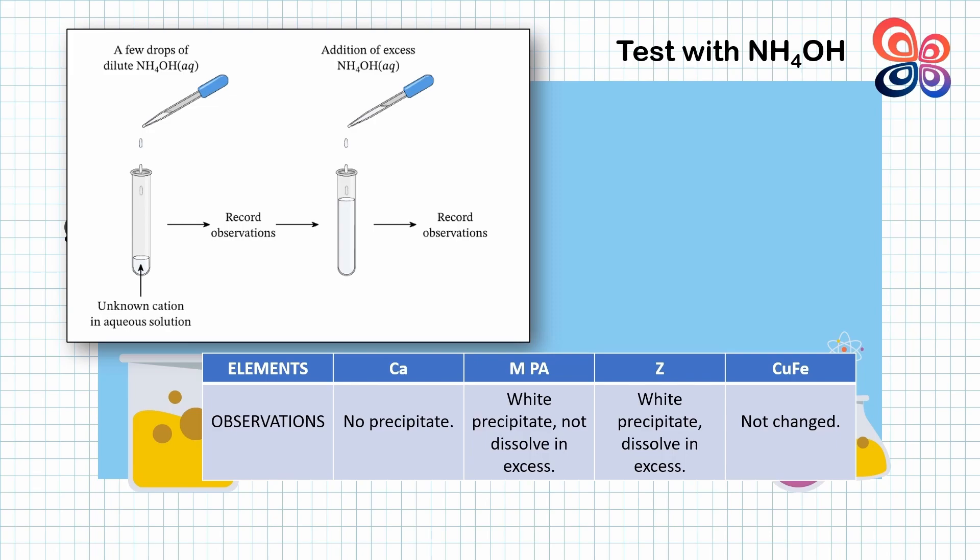As we are concerned that lead and aluminium share the same chemical properties when these cations are tested with sodium and ammonium hydroxide. So how to differentiate these cations?